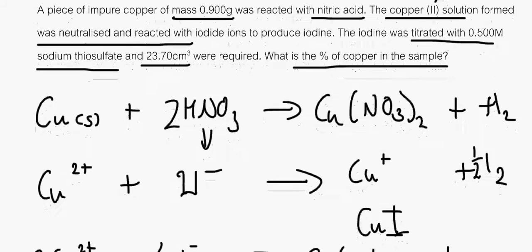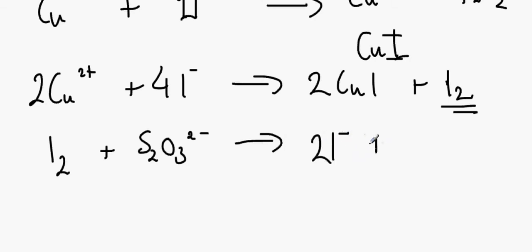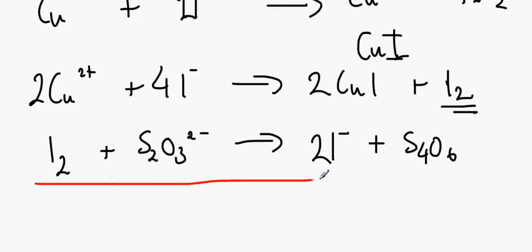This iodine that has been produced gets reacted with the thiosulfate ions, S2O3²-, to make the iodide ions again, plus S4O6²-. This equation is very important — learn it. This is the epitome of redox titrations. You need to learn this. Obviously, if you don't like learning things off by rote, you can definitely just learn it as written, or you can derive it. Note there is a two in front of the thiosulfate.